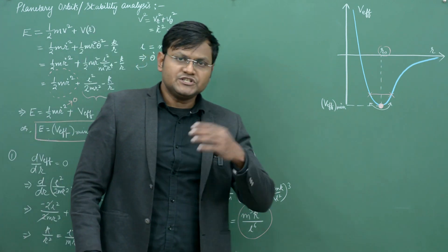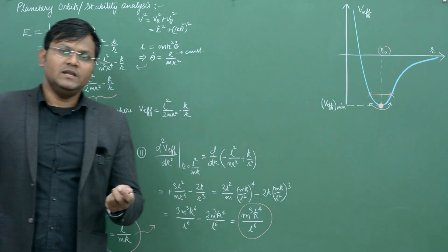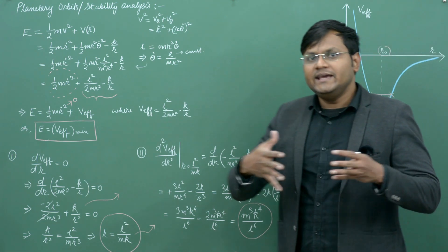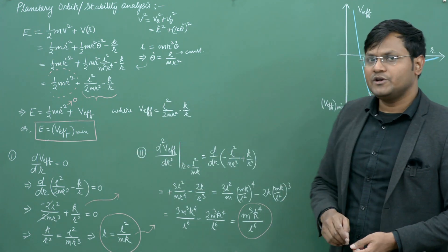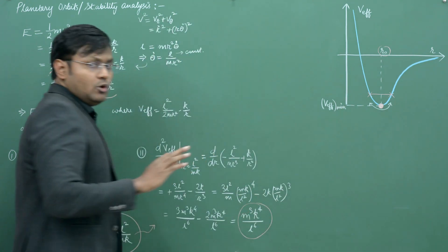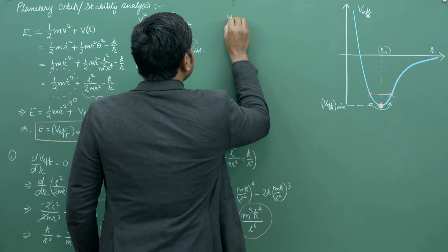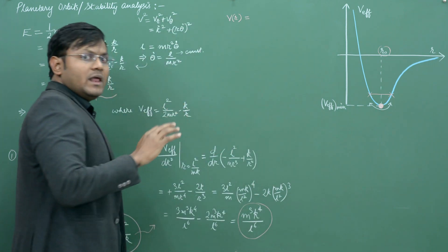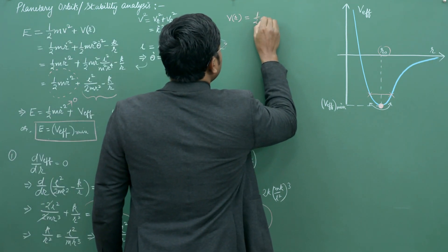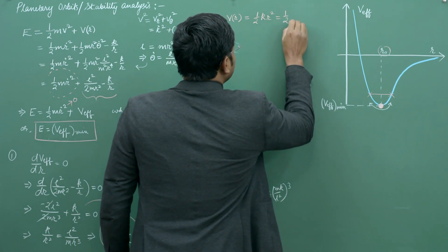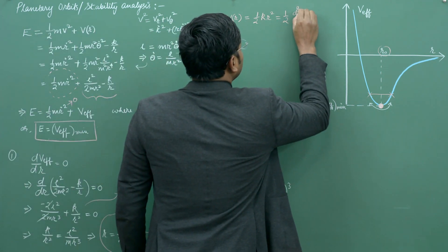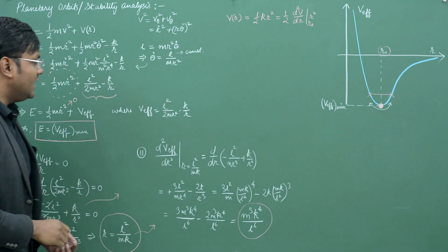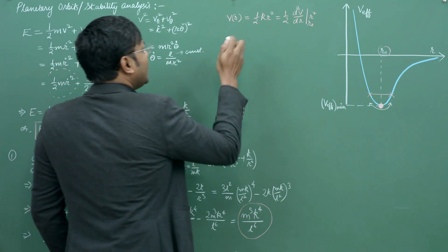As I showed in my previous video, any potential function V(r) expanded in a Taylor series around its minimum can be approximated for small oscillations as a harmonic oscillator of the form ½Kr², where K is the effective force constant given by the second-order derivative of the potential evaluated at the minimum, d²V_eff/dr² at r = r₀.